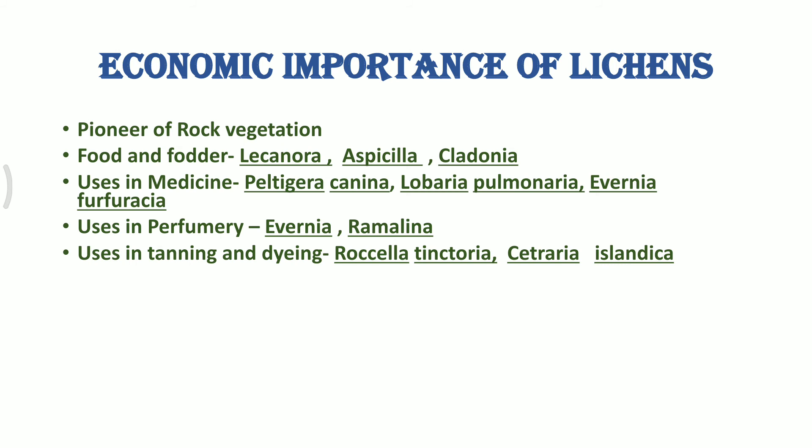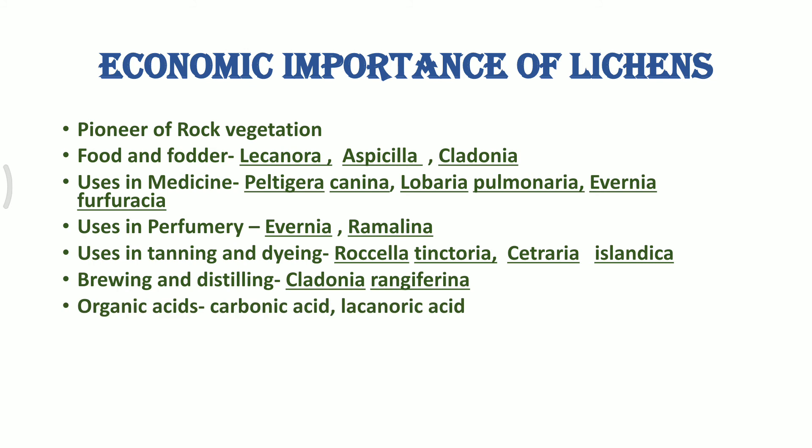Lichens are also used in the tanning and dyeing industry. The litmus indicator is made with the help of Rocella tinctoria, which is a lichen. Cetraria islandica is used for tanning, acts as an astringent, and helps in removal of tannins. Distilling industries also use Cetraria islandica or Cladonia rangiferina for obtaining alcohol in some countries because of their high glucose content. Some organic acids like usnic acid and lichenic acid are also extracted from lichens due to their high organic acid content.